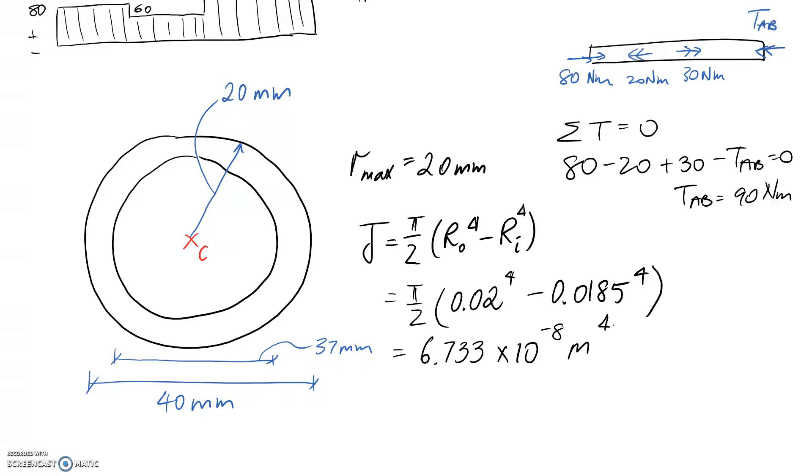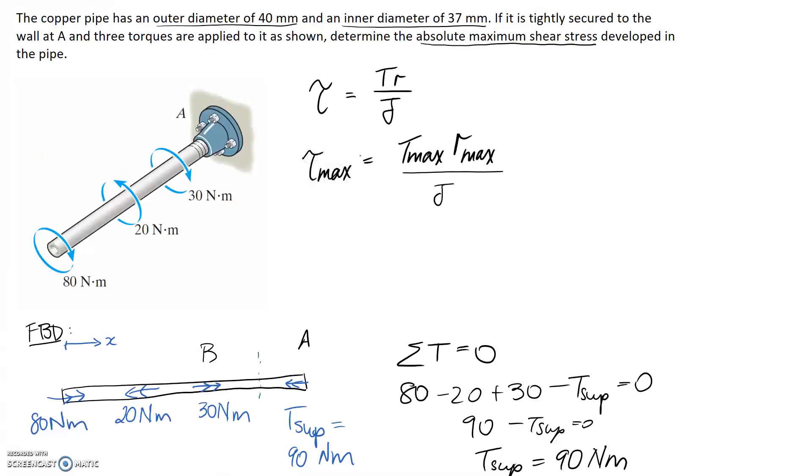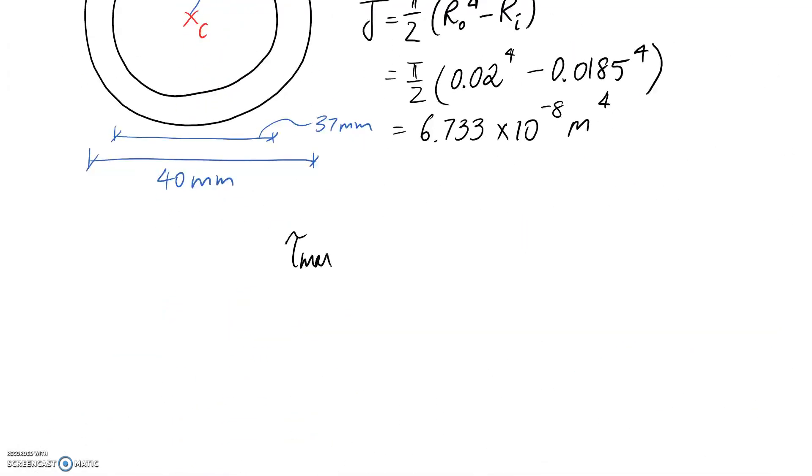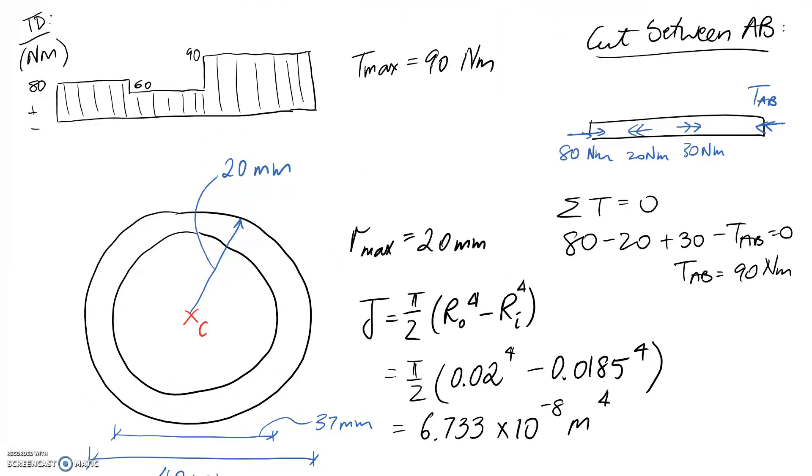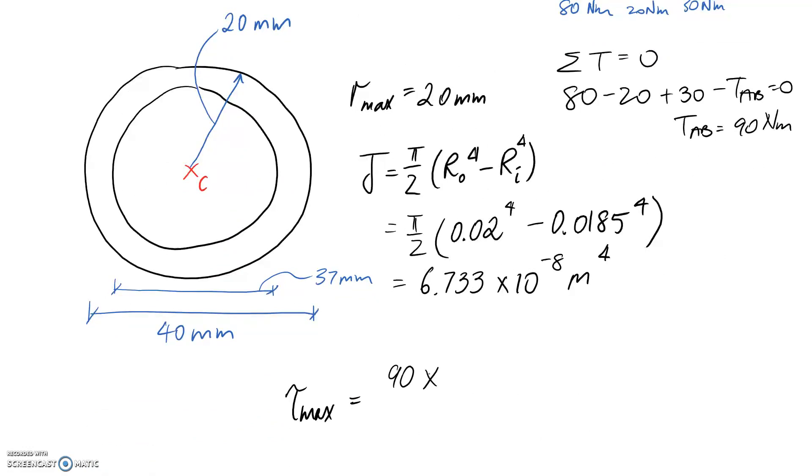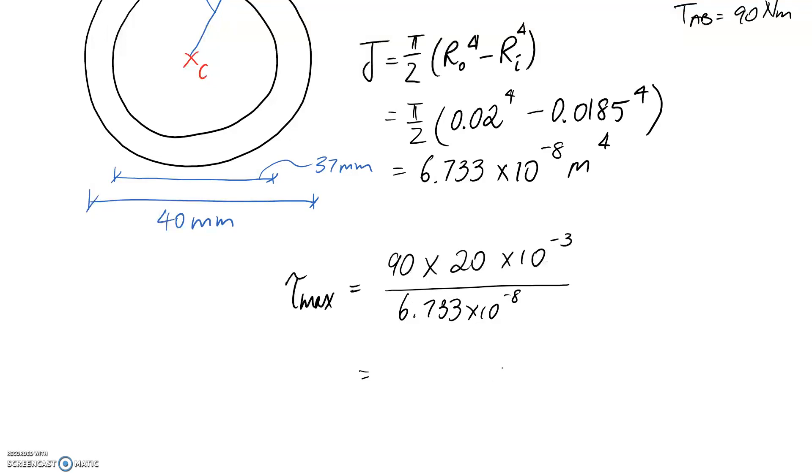We now have all the information required to fill out our maximum shear stress equation. I'll substitute in: the maximum torque is 90, the maximum radius is 20 millimeters, so converting to meters means times 10^-3, and on the bottom is J, which we just worked out and is already in base units. Since everything is in base units, I should get an answer in pascals. Putting this in a calculator, it comes to about 2.673 × 10^7. This is quite a big number, so you probably want to convert it to megapascals, which means dividing by 10^6. You end up with 26.73 megapascals for your answer. That's all there is in this video, and I'll see you in another one.